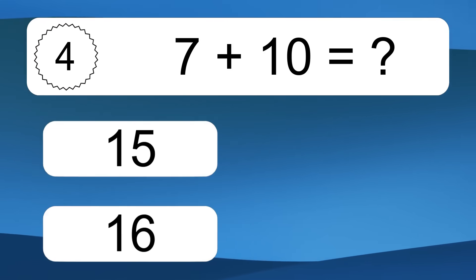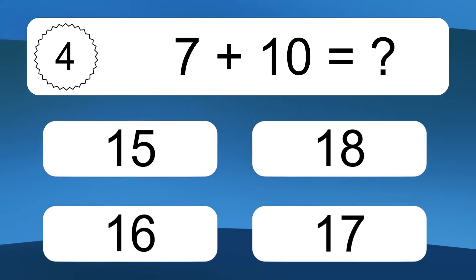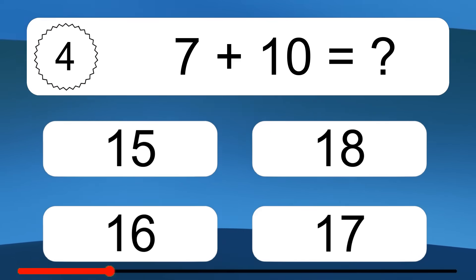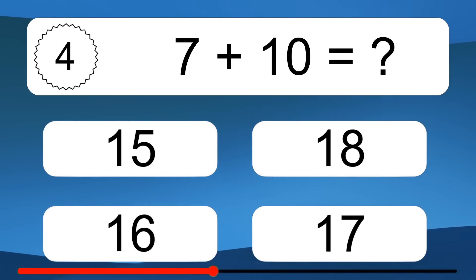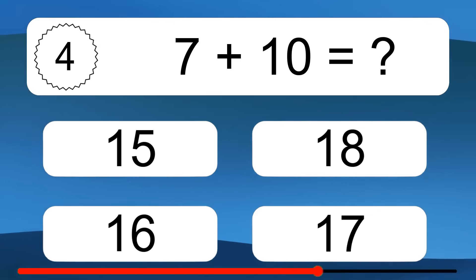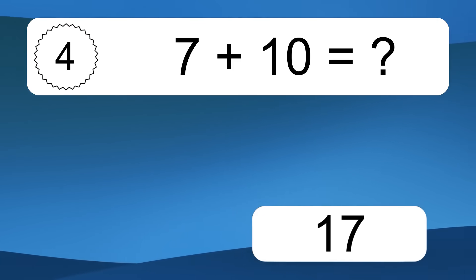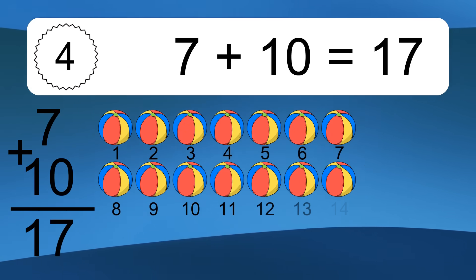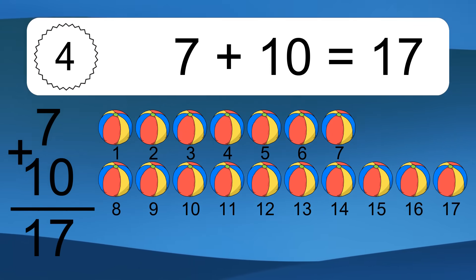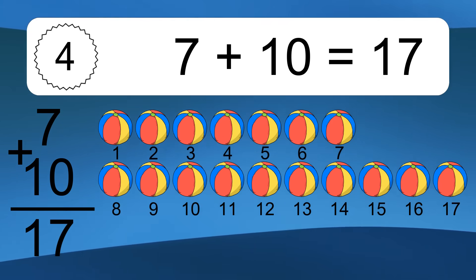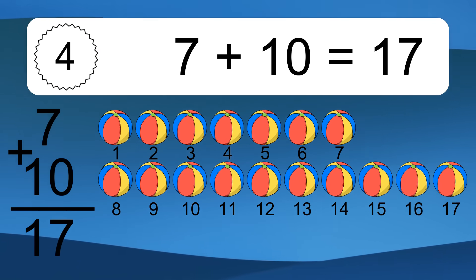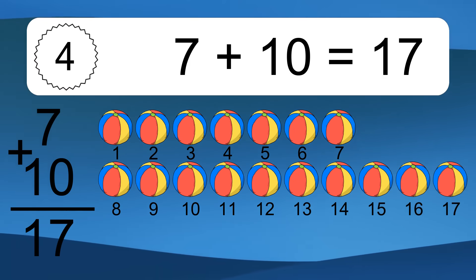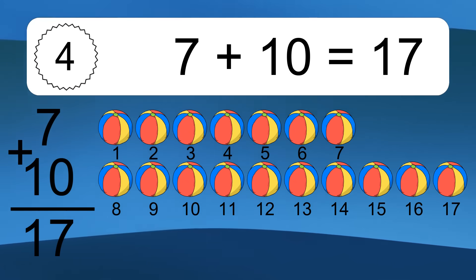7 plus 10 equals what? 7 plus 10 equals 17. Let's count it: 1, 2, 3, 4, 5, 6, 7, 8, 9, 10, 11, 12, 13, 14, 15, 16, 17.